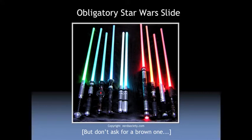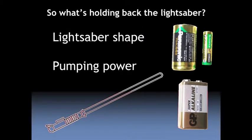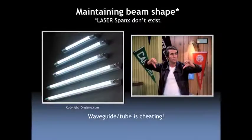So if lasers are so awesome, why can't we transform them into a lightsaber? You have two main issues: one is maintaining that iconic beam shape, and the second is the amount of pumping power that you need. Traditionally you'd use something like a waveguide or a tube to contain light into a cylindrical rod. But true Star Wars fans would say that's cheating — a real lightsaber has to propagate through free space. And this presents some massive issues. First of all you get beam spread over distance, as well as attenuation.